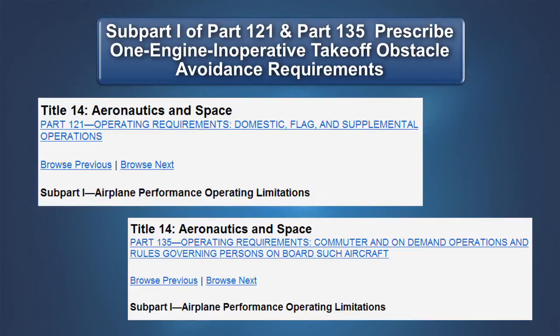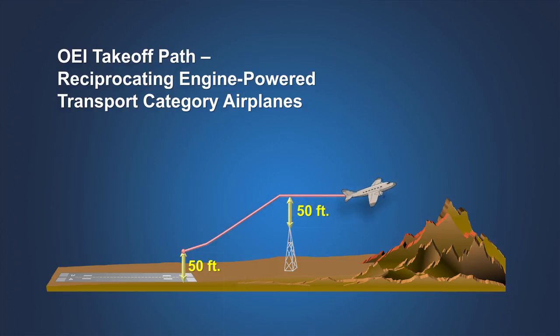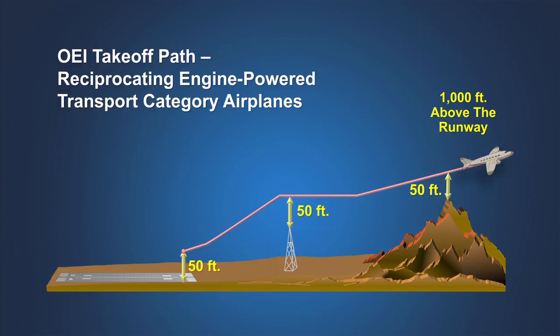The requirements for takeoff obstacle clearance may be found in Subpart I of Part 121 and Subpart I of Part 135 of the Code of Federal Regulations. Looking back at the operating rules for an airplane like the DC-6 or Lockheed Constellation, following an engine failure on takeoff at V1 speed, the airplane was required to clear obstacles by 50 feet at any point until the airplane's actual height above the runway was 1,000 feet. In the 1950s, it was recognized that 50 feet of obstacle clearance after an engine failure was not sufficient to support the new generation of jetliners.